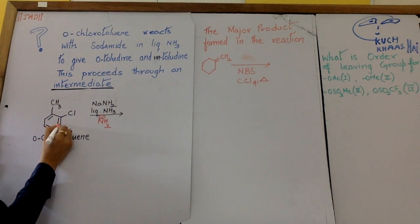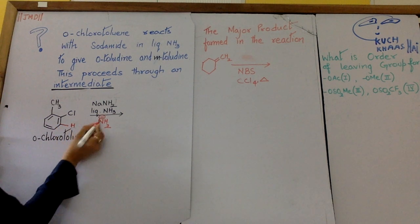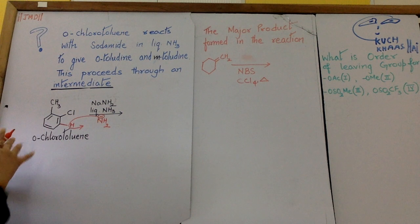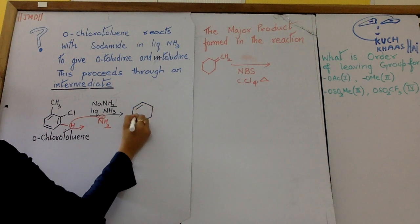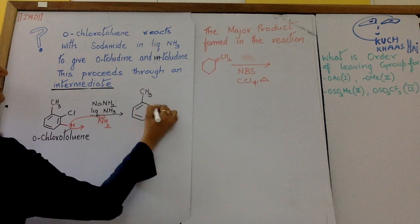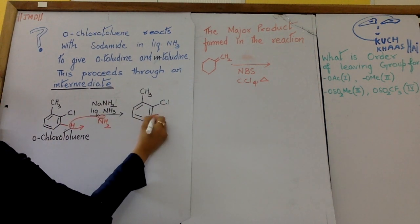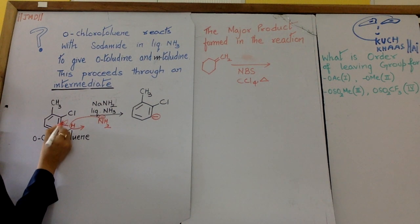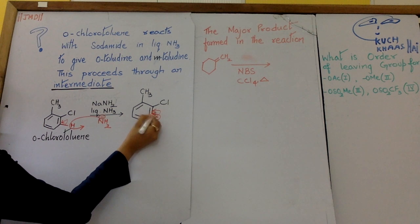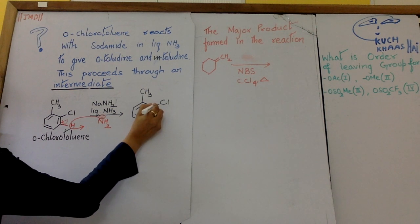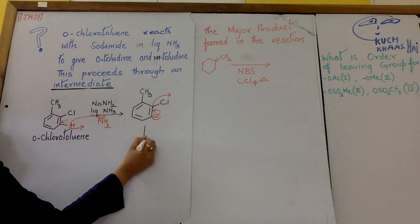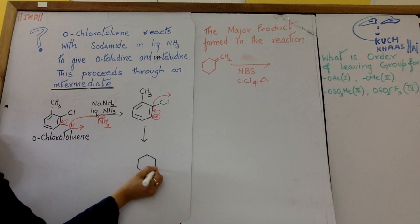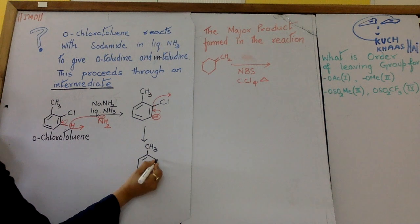This nucleophile abstracts a proton from here like this and we get an aryne aromatic carbocation like this because these electrons settle here. These electrons move here resonating and this chlorine is out with the bond, with the two electrons of the bond.